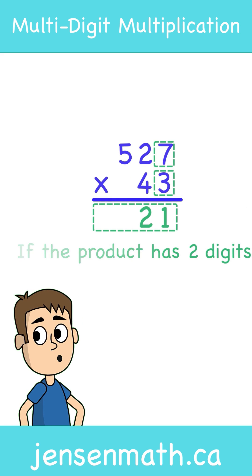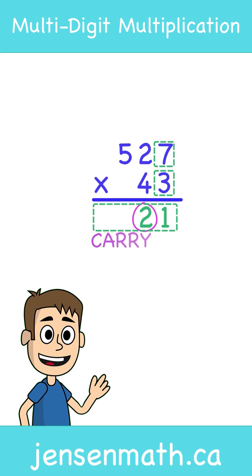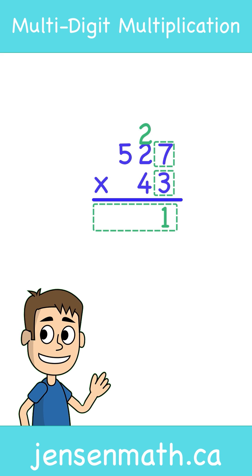3 times 7 is 21. You leave the ones value, but carry the tens value above the next digit in your top number.